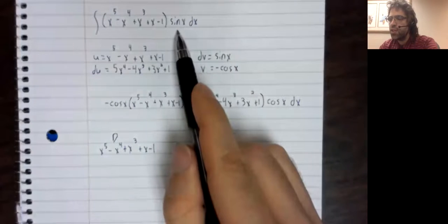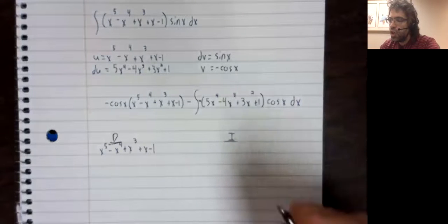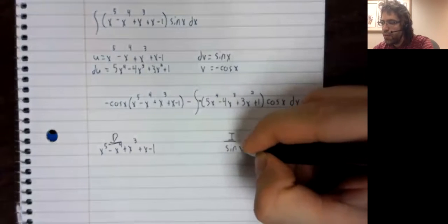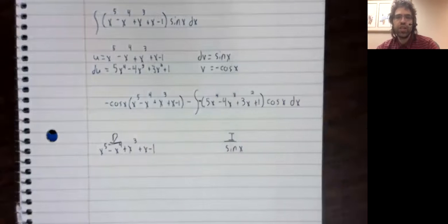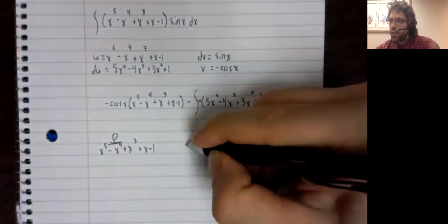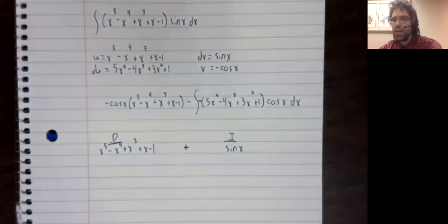And the sine, which we'll put under I for integration. And between these columns, we'll put a plus sign.